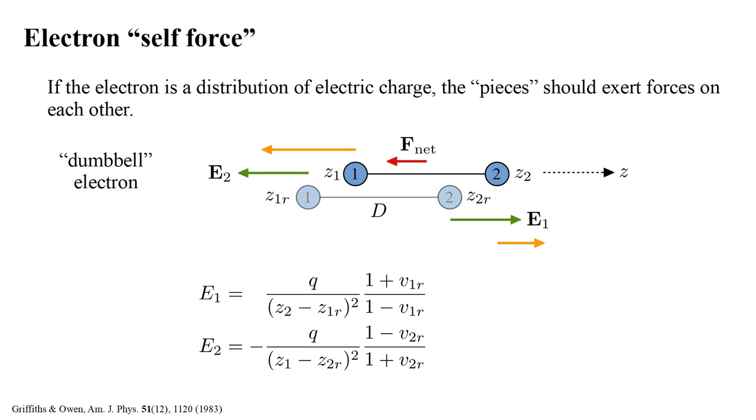According to electromagnetic theory, if the charges were in motion when the fields were produced, the field magnitudes are modified by the velocity factors shown here, where V-one R and V-two R are the velocities of the parts when they were at the retarded positions Z-one R and Z-two R. Notice that if the electron had been moving to the right, so both velocities are positive, the V-one R factor will increase the magnitude of E-one, and the V-two R factor will decrease the magnitude of E-two.